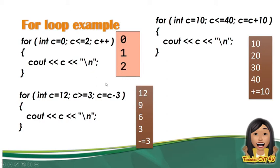Move tayo sa susunod na sample. Ang dini-display niya ay 10, 20, 30, 40. Kung titignan ninyo yung output, increment siya — nag-increment siya ng 10. Kasi, 10 plus 10 is equal to 20, 20 plus 10 is equal to 30, 30 plus 10 is equal to 40. Kung titignan niyo yung program, ano yung pinakaunang value? Ang unang value ay 10. Kaya siya yung sinet nating initialization or starting point. Ngayon, yung end niya ay hanggang 40. Kaya, siya yung nilagay dito — siya yung mag-se-set ng condition na hanggang 40 lang ang i-display.